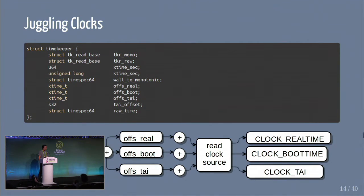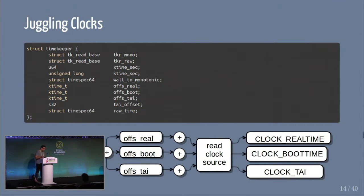We still need to implement all the different types of clocks, but we only have one physical counter counting up. We accumulate time into the TK mono_base area, then add in offsets — offset_real, offset_boot — and add in the time read since we last read the cycles. We read the counter, subtract from the last calculated offsets, read the mono_base, add in this offset, and also add the time since we last read the clock source. That gives us one of these four different types of POSIX clocks. The mult-shift is hidden in that read clock source step and handles the small time calculation.